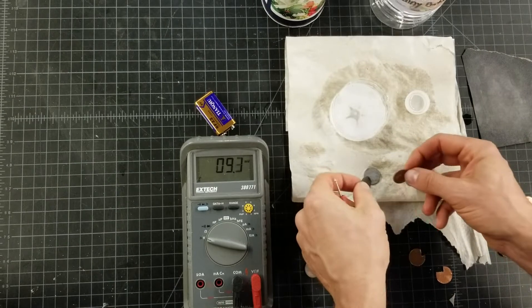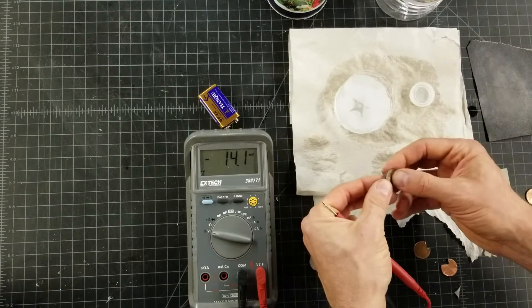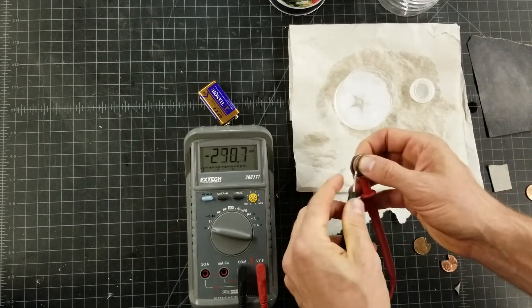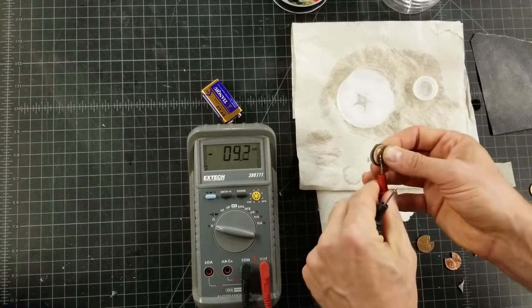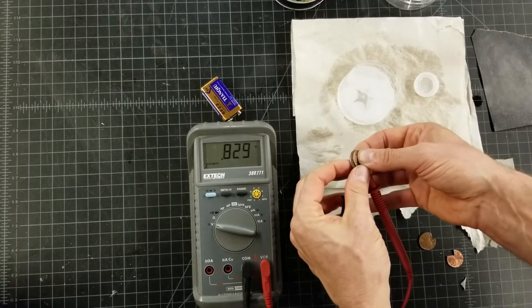But when you put two dissimilar metals, the zinc and the copper, through an electrolyte, you will get 0.9, sometimes 0.8, between 0.7 and 0.9.